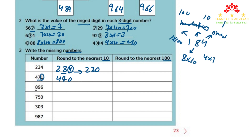The third number is 896: we underline 9 and circle 6. Since 6 is 5 or more, we round up. To round up means to increase the underlined digit by 1. If we increase 9 by 1, it becomes 10, so 1 of the 10 is added to 8 making it 9, and we write two zeros in place of 9 and 6. So the rounded number is 900.